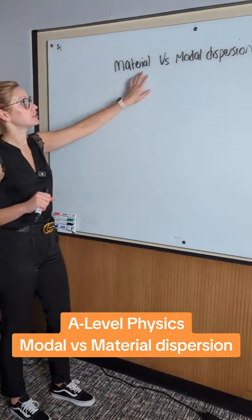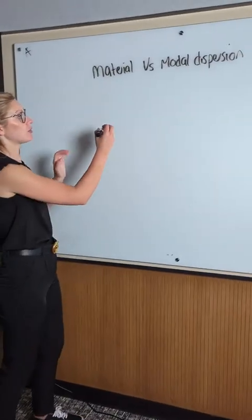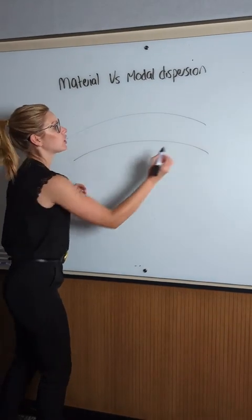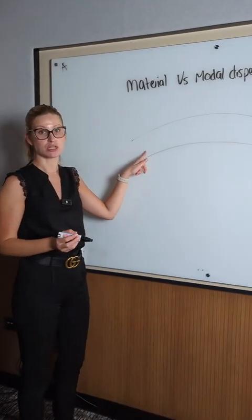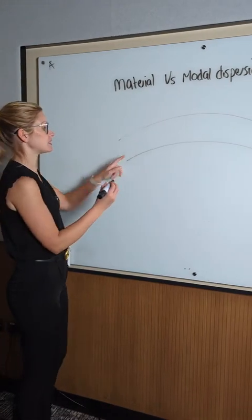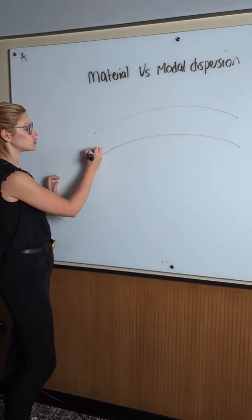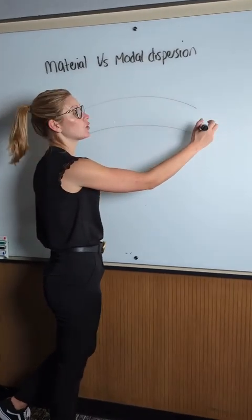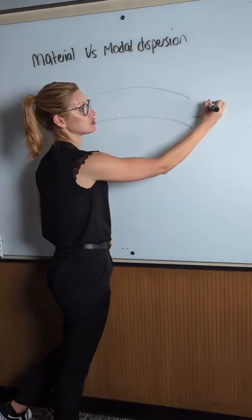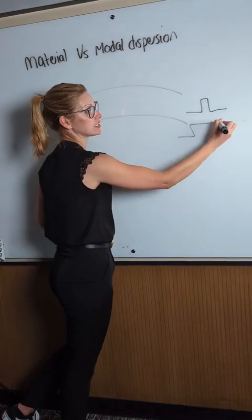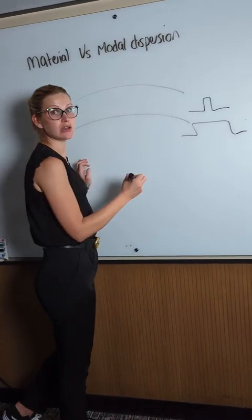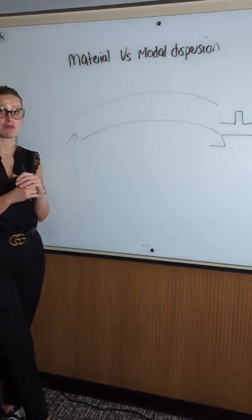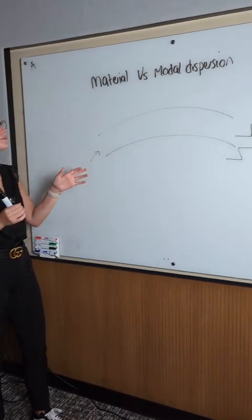So material versus modal dispersion — what we're actually talking about is your optic fibers. We did a TikTok before on how optic fibers work. So what happens is we're putting light into the optic fiber and we want to get our signal at the end. We want our signal to be sharp — we don't want our signal to be broadened. We want a sharp signal so we can actually find out what the information was, not a weak signal.